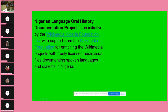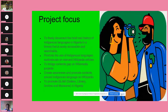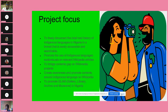The Nigerian Language Oral History is an initiative by the Wikimedia Nigerian Foundation, Inc., with support from the Wikimedia Foundation, for enriching the Wikimedia project with freely licensed audio visual files documenting spoken languages and dialects in Nigeria. A key challenge is that there are quite a number of languages in Africa that are only spoken but not written. We feel it is important to start somewhere by documenting the oral history of some of these languages. Our plan is to freely document the brief oral history of indigenous languages in Nigeria in a format that is easily accessible and searchable.